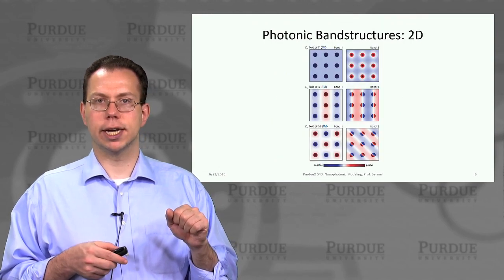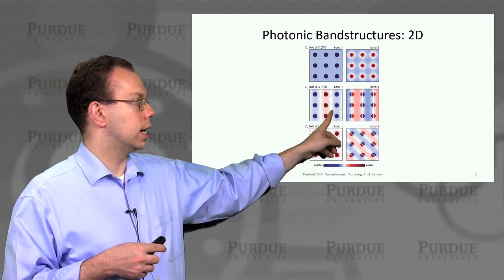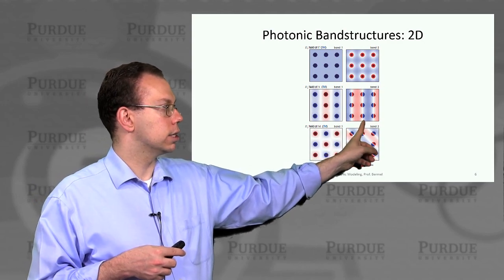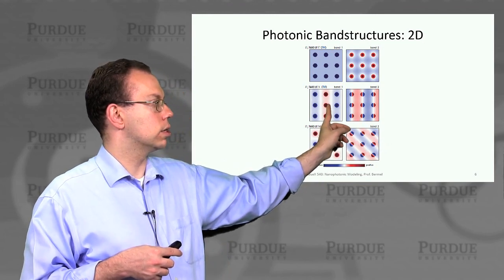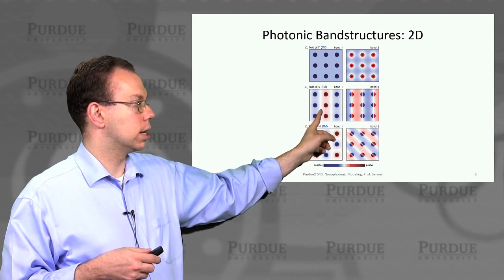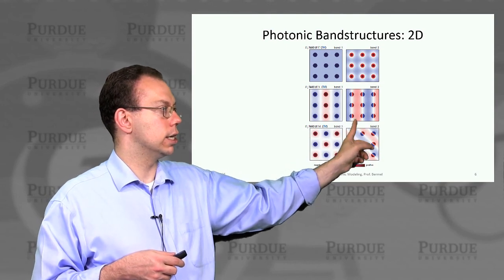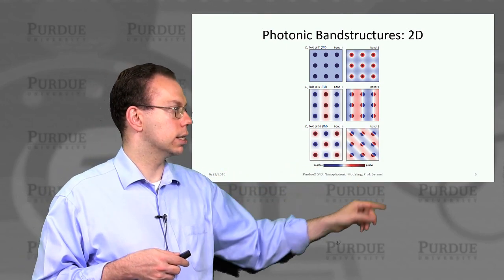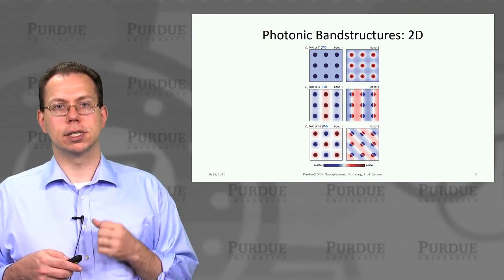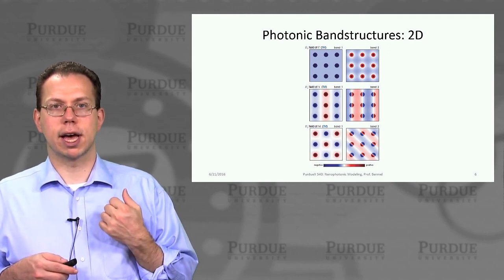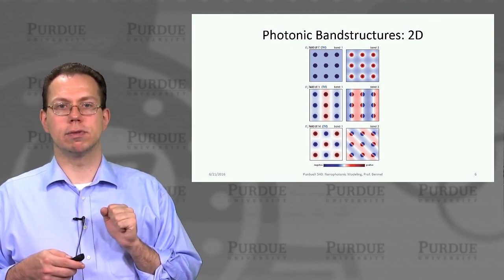To quickly visualize what this field profile looks like, you can see here explicitly that in the first band at X you actually have this X periodicity, but then the localization in different regions is much different. You have an exclusion from the high index region here, which contributes to higher energy in the band gap. Similarly, you have localization versus exclusion from the high index regions, which is giving us a physical picture of that band gap we previously talked about in the 1D case. It also happens in the 2D case over a broad range of wave vectors.